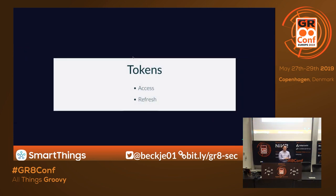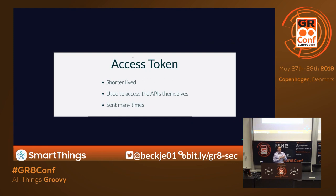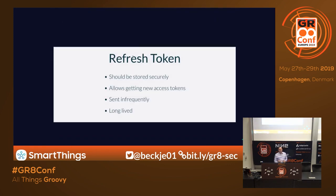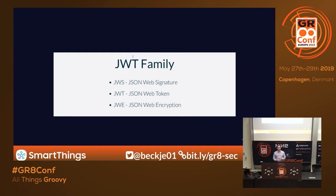There are two main types of tokens in OAuth: access and refresh. Access tokens are intended to be short-lived — they're used to access the APIs themselves and are sent many times, so the likelihood of them being compromised is higher. Refresh tokens should be stored securely because they let you get new access tokens, but they're sent very infrequently — maybe every 20 or 30 days — and they live a long time.